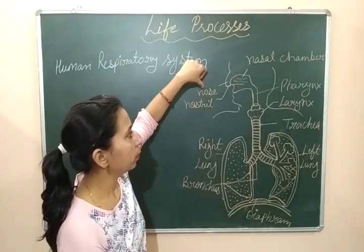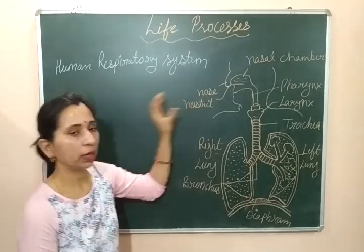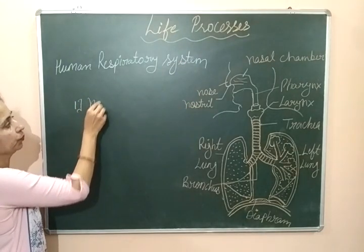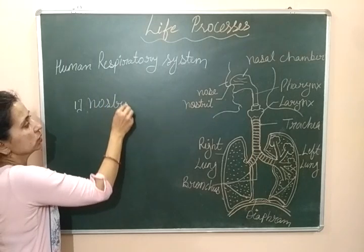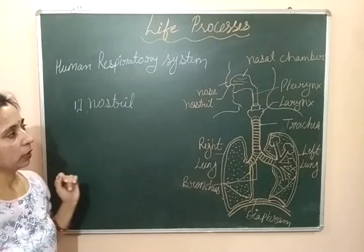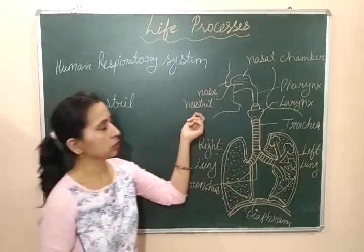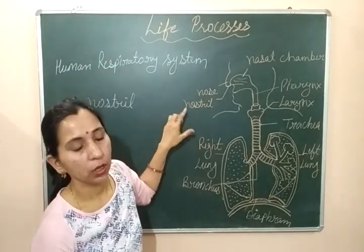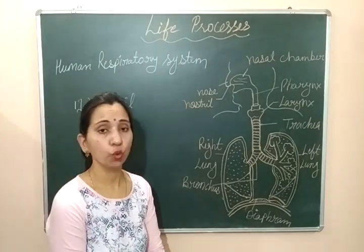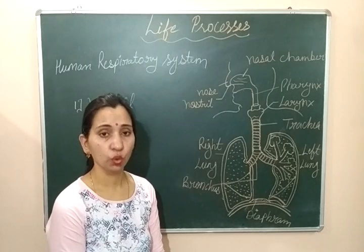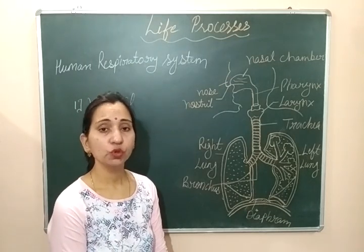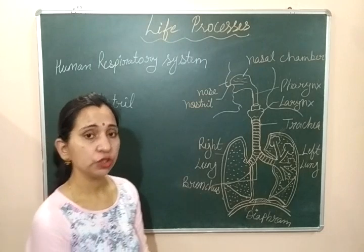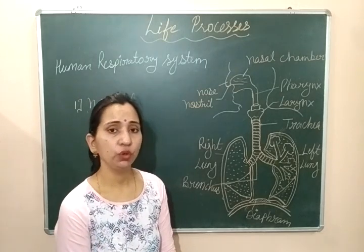The first part of the respiratory system is the nostril. The opening of the respiratory system is the nostril. Nostrils are the pores of the nose — we have two pores. These are known as nostrils, by which air enters inside the nose.